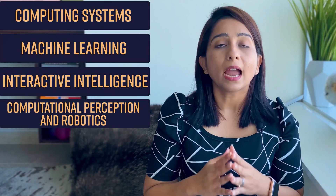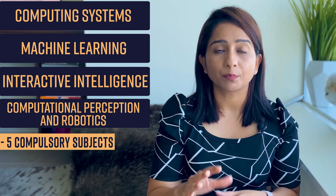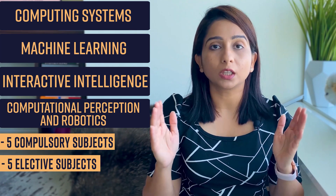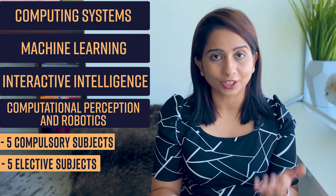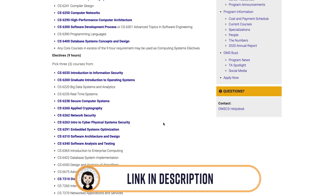Once you get admitted to Georgia Tech's program, you have to decide what specialization you are going to pursue. Ideally, you should have this in mind while writing your statement of purpose, as explained in the previous video. But if you're still undecided, you need to check what kind of specialization you want to pursue. Georgia Tech offers four specializations as listed here. Under each specialization, there are five mandatory subjects and five electives. The requirement is to complete 10 subjects to earn 30 credits — each subject is equivalent to three credits. The list of subjects can be found on the specialization pages, and the link is in the description.